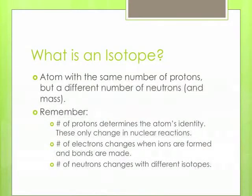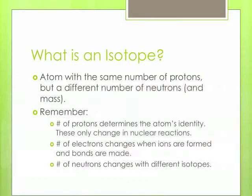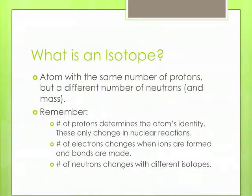It's important to remember that the number of protons determines the atom's identity. That iron has 26 protons is what makes it an iron atom. The number of protons only changes if an atom goes through a nuclear reaction and becomes a new element. The number of electrons change a lot when ions are formed and bonds are made, and the number of neutrons also change with different isotopes.